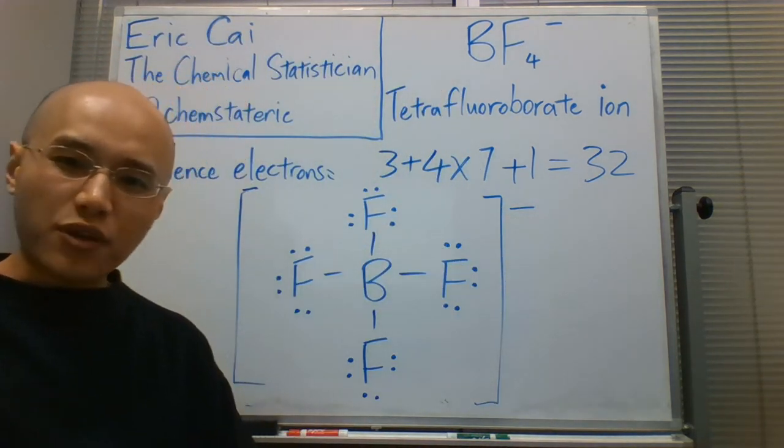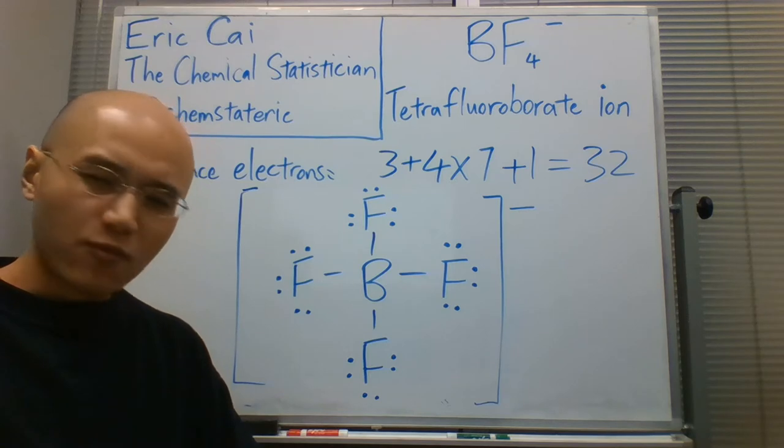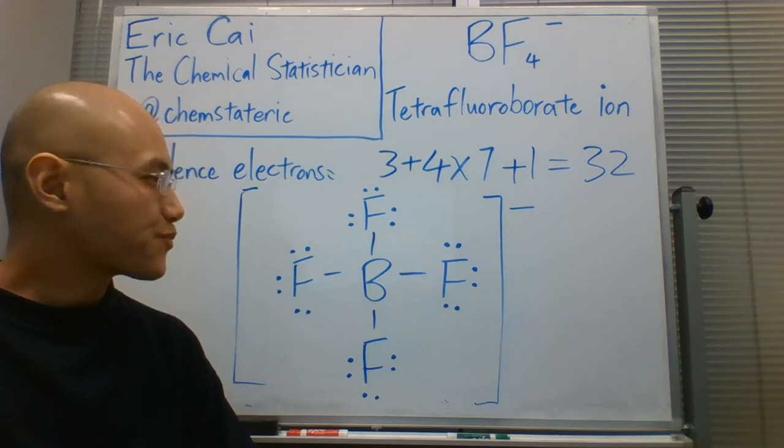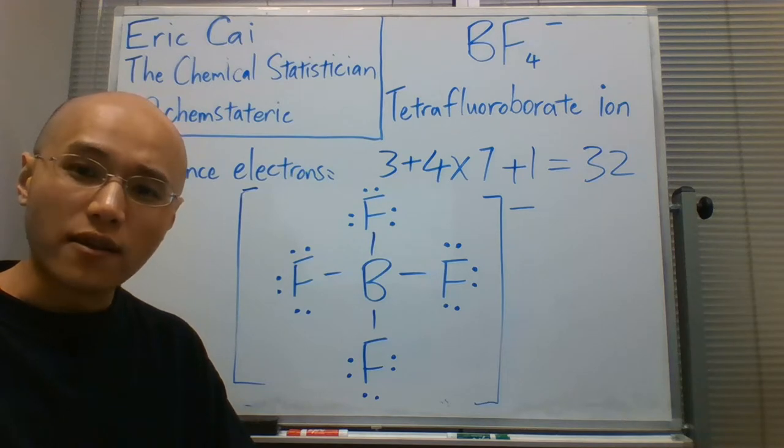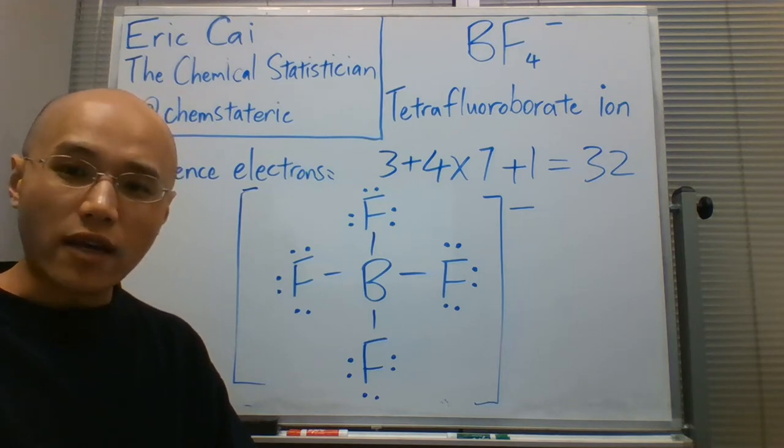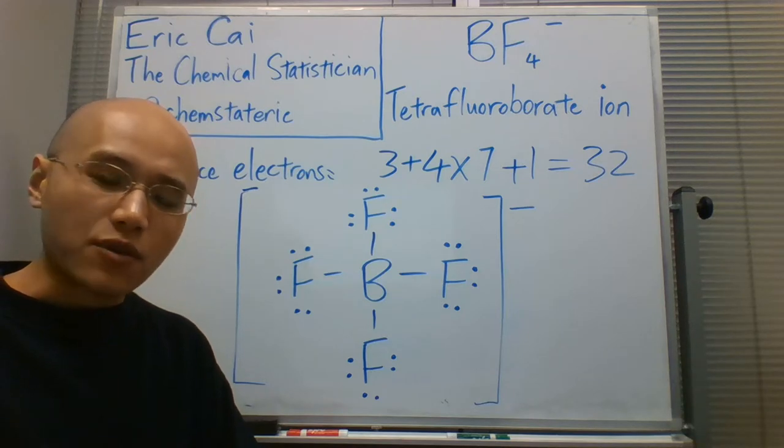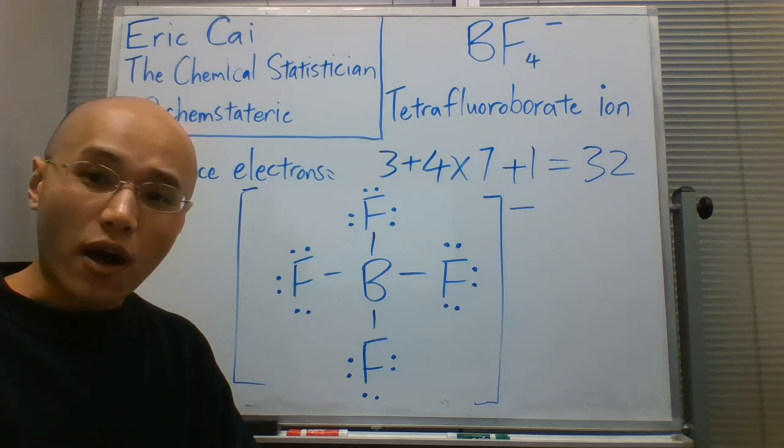So that seems like a pretty straightforward example. Why did I bring it up? Well, this is actually a follow-up to my earlier video on the Lewis structure of boron trifluoride. Recall that in that example, there isn't a stable octet around the boron.